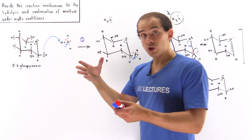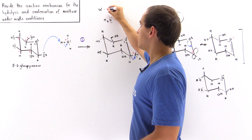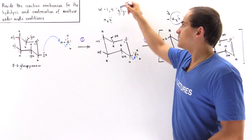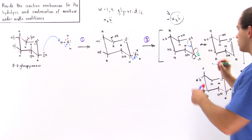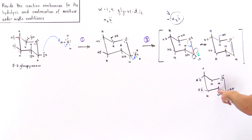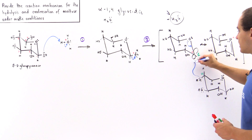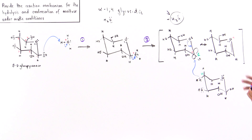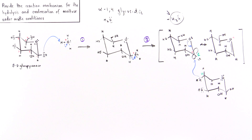Because we're dealing with maltose, the glycosidic bond in maltose is an alpha-1,4 glycosidic bond. This means there is a bond between the first carbon of sugar one and the fourth carbon of sugar two. So our nucleophile is the hydroxyl group on the fourth carbon of the second glucose, and it attacks the first carbon from the bottom so that we form the alpha-1,4 glycosidic bond.